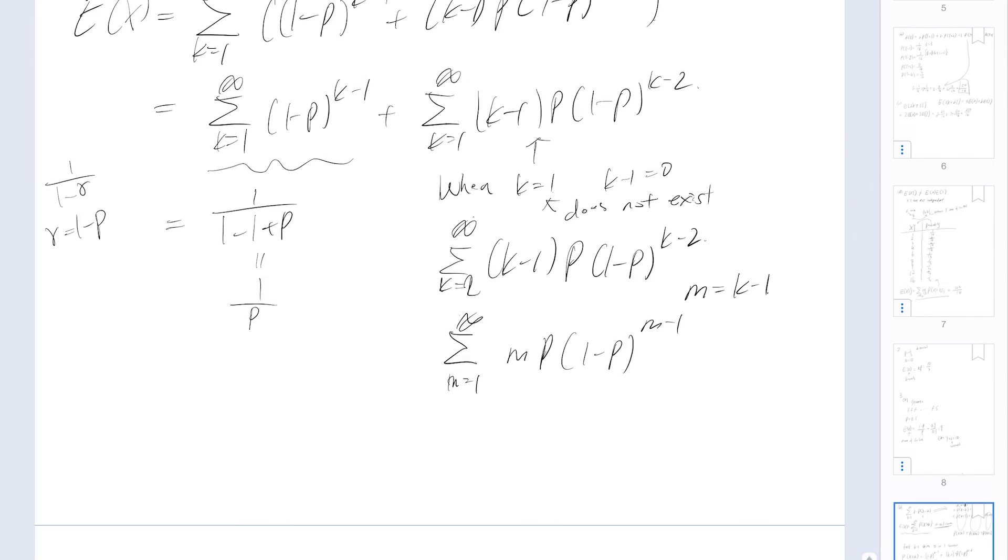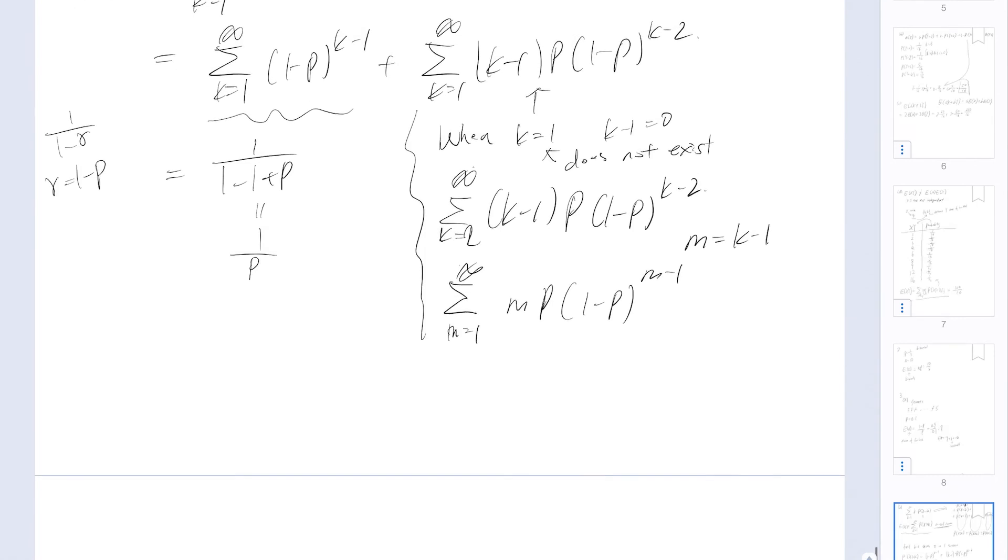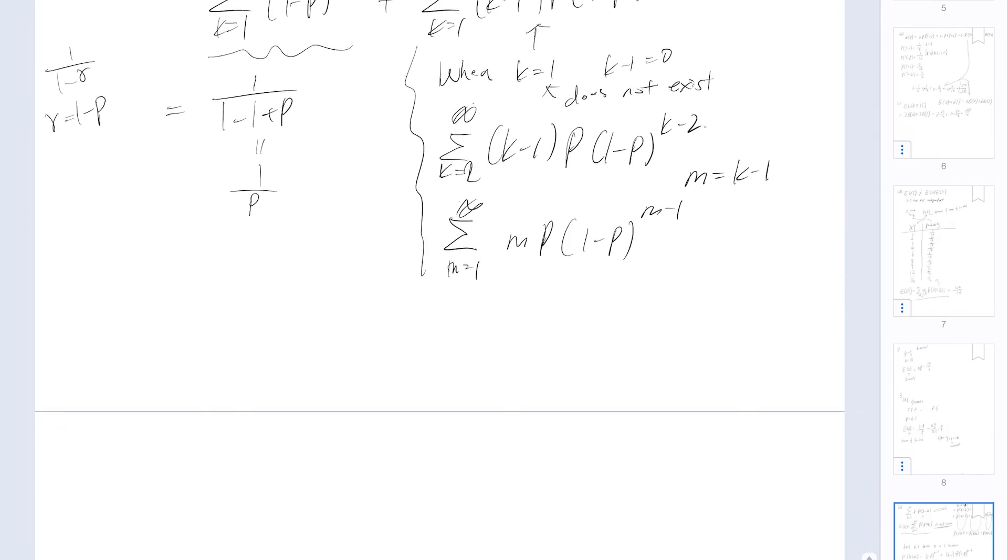So this whole process is purely algebraic. There's nothing related to what we are learning here, but it's just a way of simply simplify the sum. And we see that this is basically the expectation of getting a geometric series. So this is 1 over p.